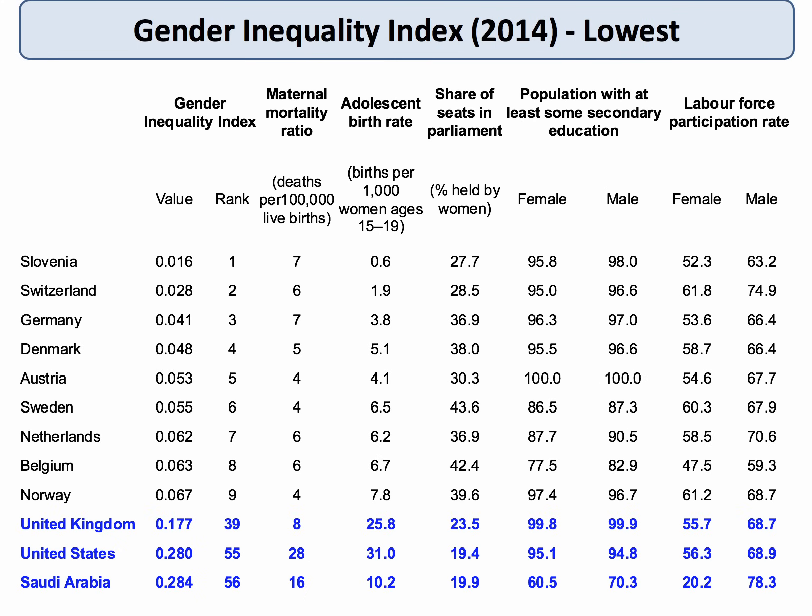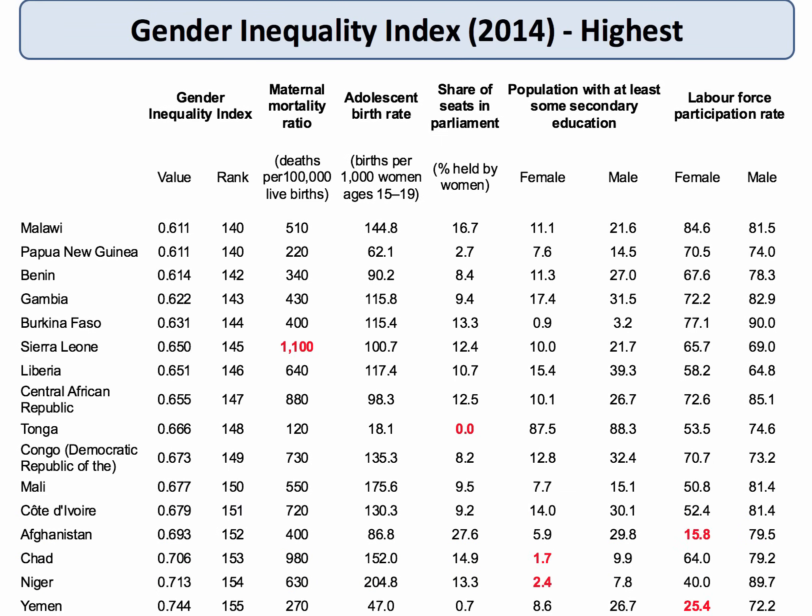Turning to gender inequality, the indicators used include maternal mortality ratios per 100,000 live births, adolescent birth rates, the share of parliamentary seats held by women, the share of the female population with at least some secondary education, and female labor force participation rates. The countries with the lowest gender inequality in 2014 were Slovenia, Switzerland, Germany, and Denmark.